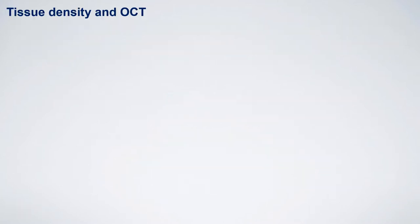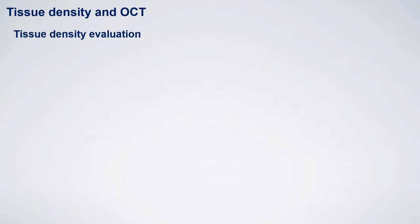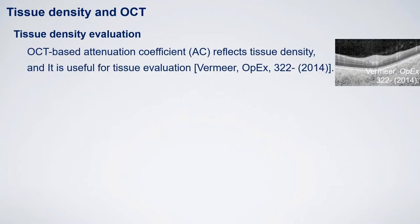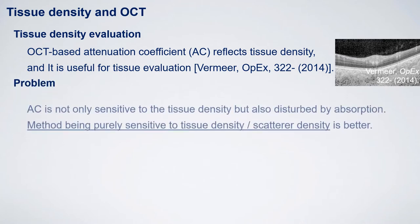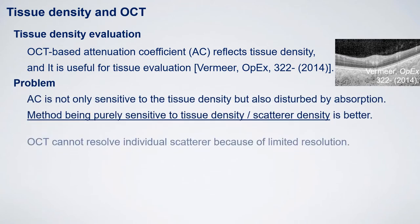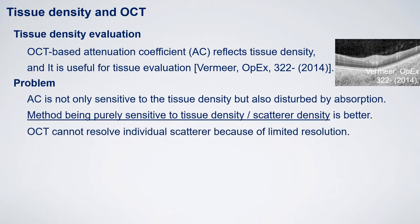Let me start from a little background on tissue density and OCT. OCT-based attenuation coefficient imaging is useful for tissue evaluation because the attenuation coefficient is an indicator of tissue density. However, the attenuation coefficient is not only sensitive to tissue density but also to absorption. So a method purely sensitive to tissue density is better.